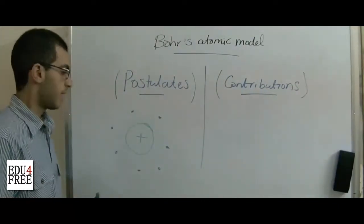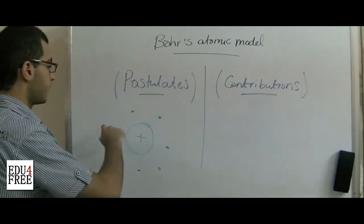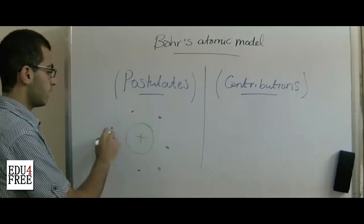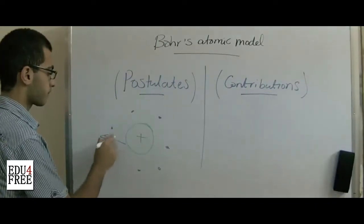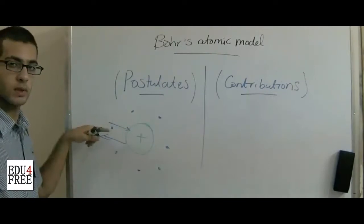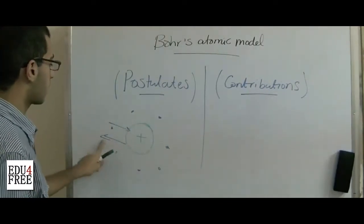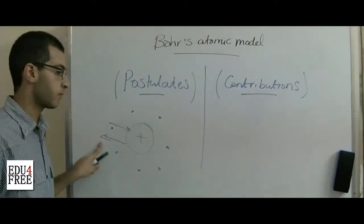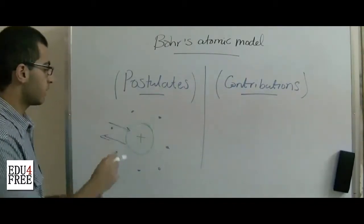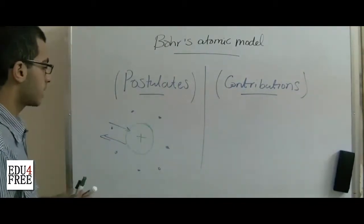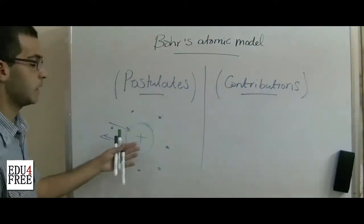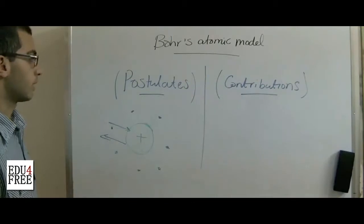He also said that there is a centrifugal force equal to the attraction force. The arrow inwards represents the attraction force, and the arrow outwards represents the centrifugal force. They are equal in magnitude and opposite in direction, and this leads to the continuity of orbiting of electrons around the nucleus. These are the postulates.